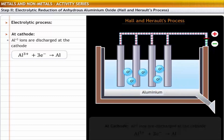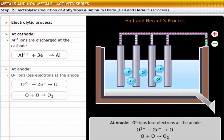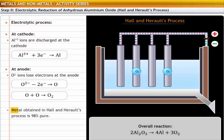The oxide ions lose electrons and form oxygen atoms at the anode. The oxygen atoms combine and form oxygen molecules. The metal obtained after Hall and Herold's process is about 98% pure and needs to be purified further.